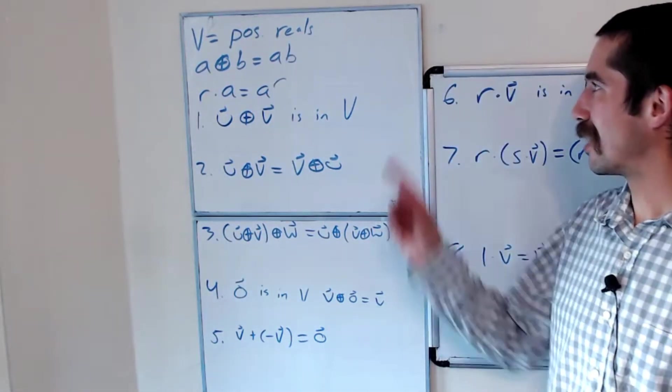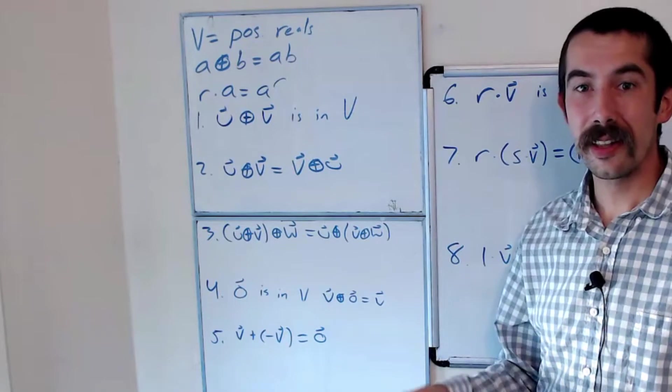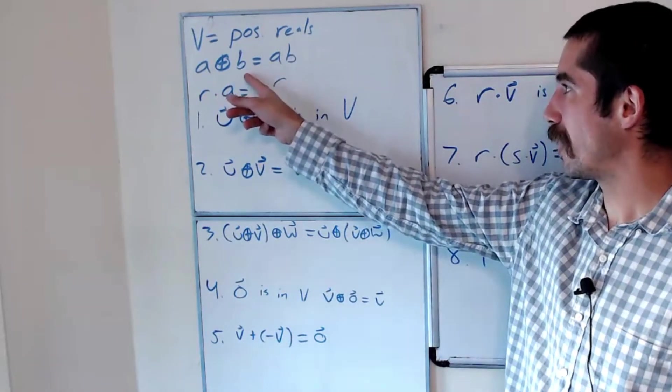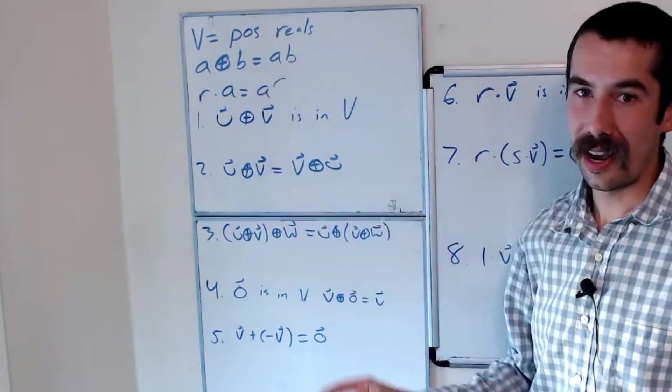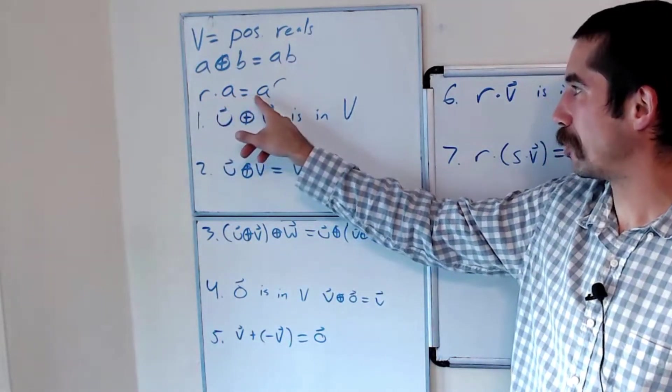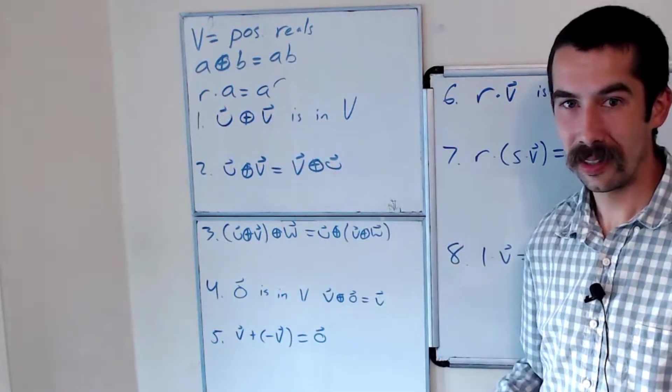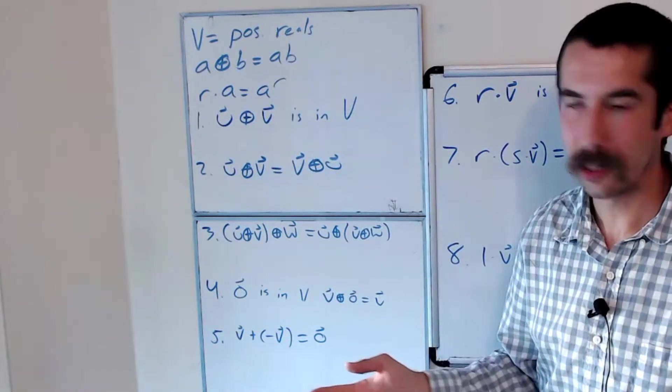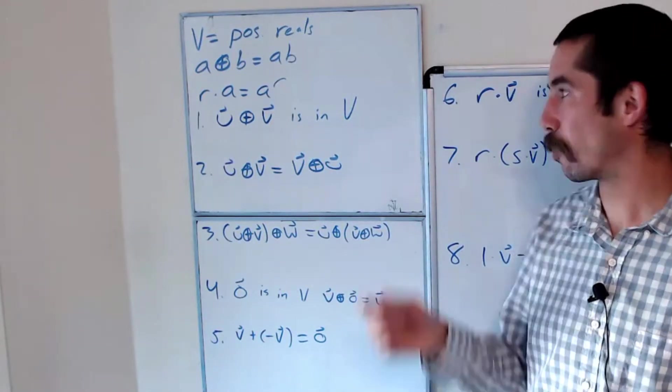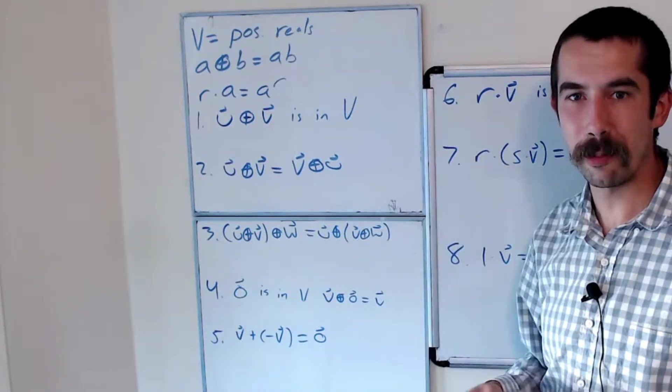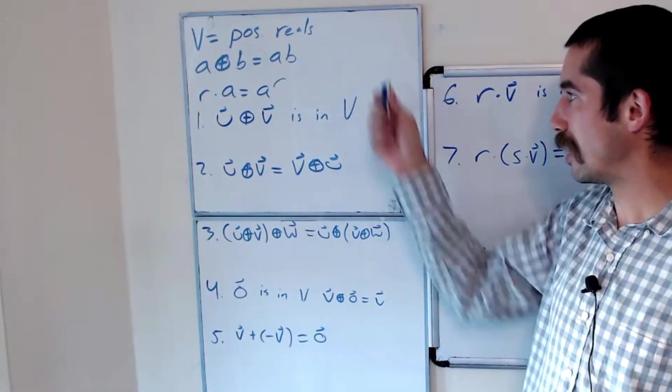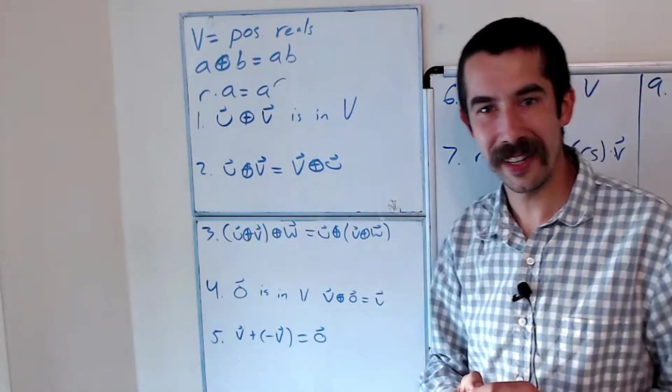Today we're going to show that the set V, which is the positive real numbers, with addition A⊕B = AB, and scalar multiplication r·A = A^r, and we're going to let our scalars be any real number. We're going to show that this is a vector space. So we're going to go through all 10 axioms of a vector space and verify that this is a vector space.